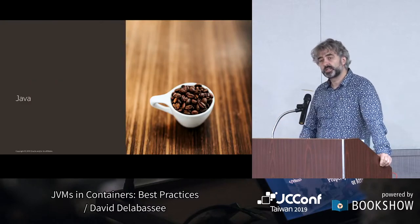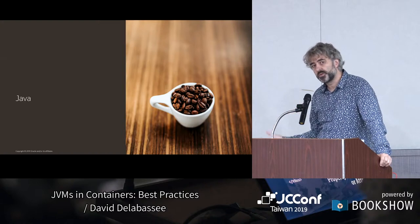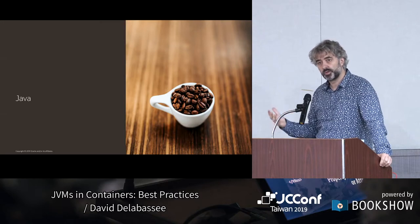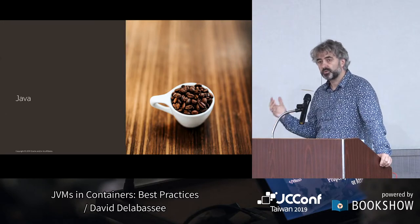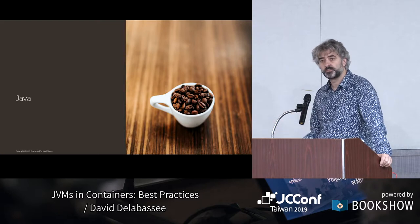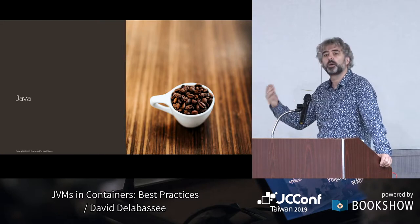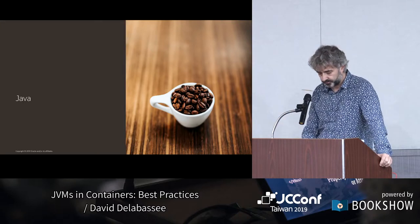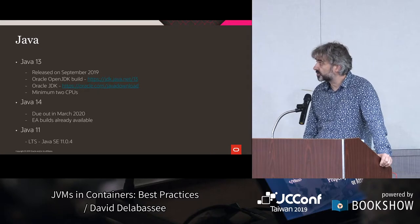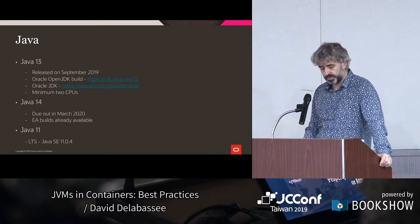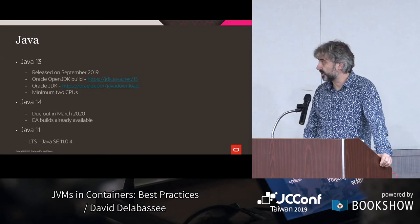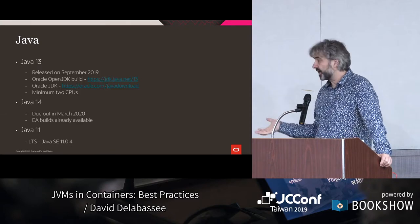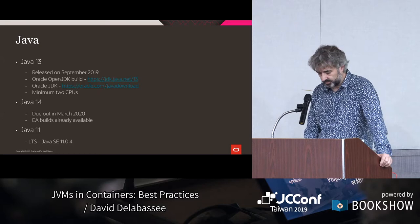Today I'm going to discuss Java running within containers, which essentially boils down to the Java Virtual Machine running within containers. I'm going to use the Java language, but this also applies to Kotlin and to any language that runs on top of the JVM. We have just released, two weeks ago, Java 13. Java 14 is coming in March, and the current long-term release is Java 11. As long as you are using one of those releases, you are on a safe path.